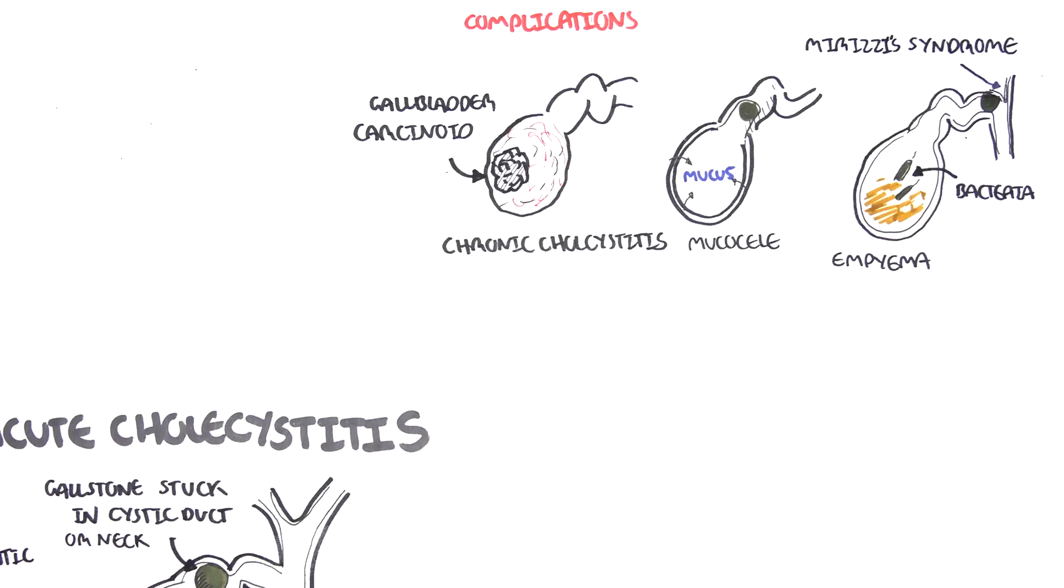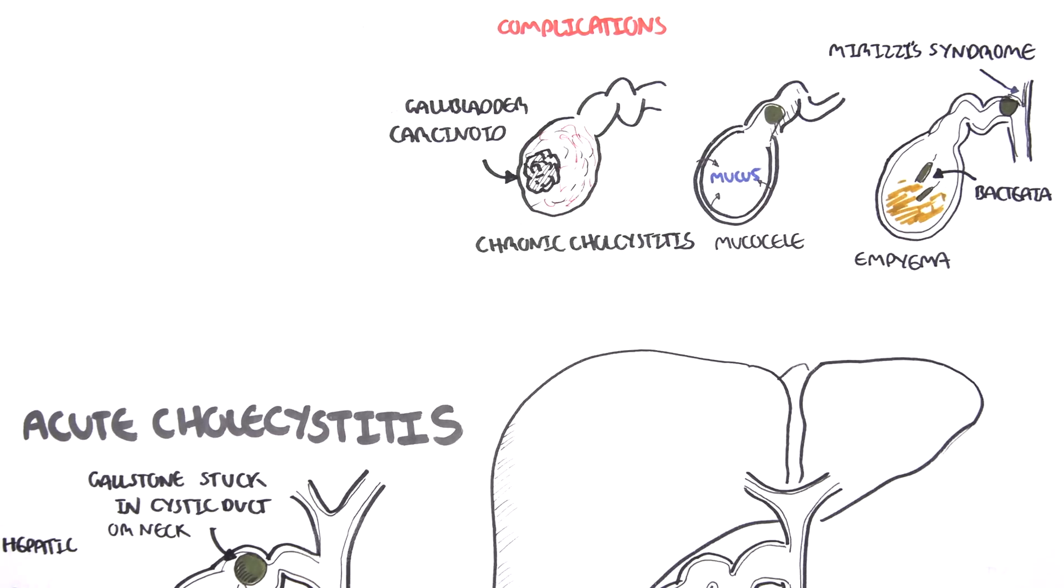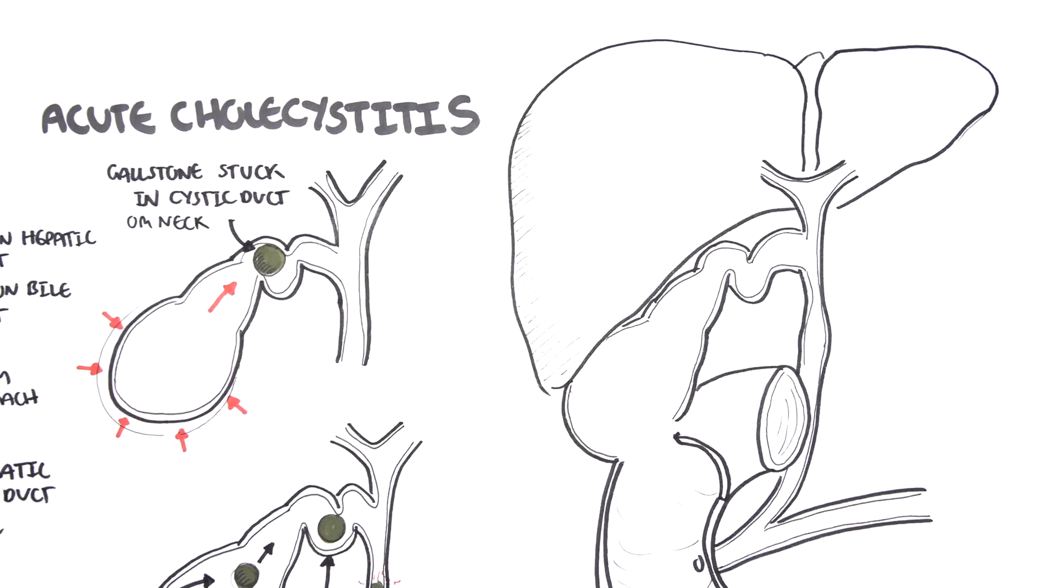There is Mirizzi syndrome. And Mirizzi syndrome is basically when the gallstone in the cystic duct actually impacts or obstructs the hepatic duct. An obstruction of the hepatic duct means that the bile being produced by the liver will go backwards, will backflow and cause what's known as obstructive jaundice.